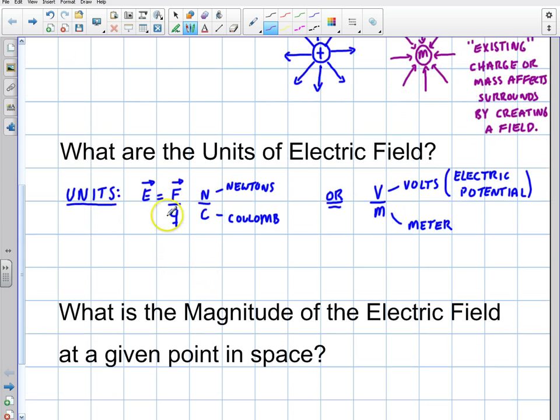And then what are the units of electric field? We said that it's force per unit charge or newtons per coulomb or volts per meter. And this is going to give us a gradient or a slope on how fast the voltage is changing.